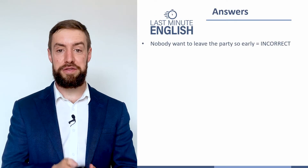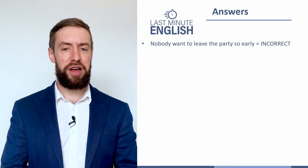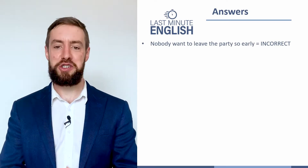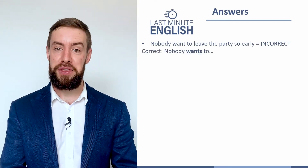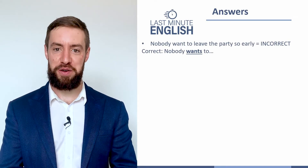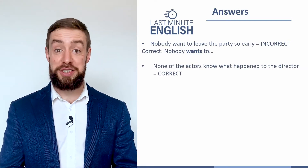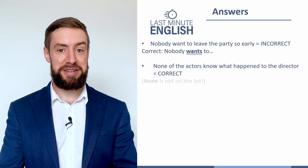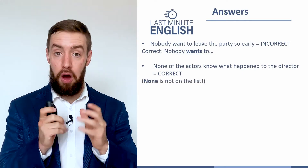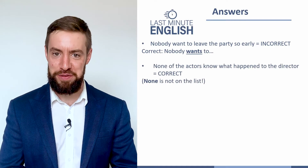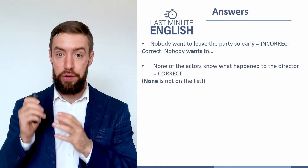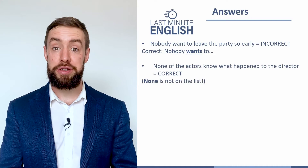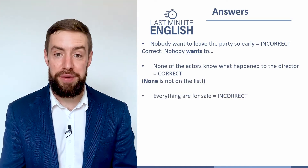Let's take a look at the answers. First: 'Nobody wants to leave the party so early.' It includes lots of people, but we think about it as singular — so the original 'nobody want' is incorrect; it should be 'nobody wants.' Next: 'None of the actors know what happened to the director.' This one is actually correct, because 'none' is not on the list. 'None' is plural — we think about it as more than one person even in grammar, so that one is third person plural.